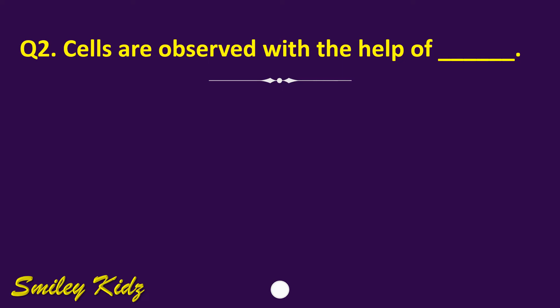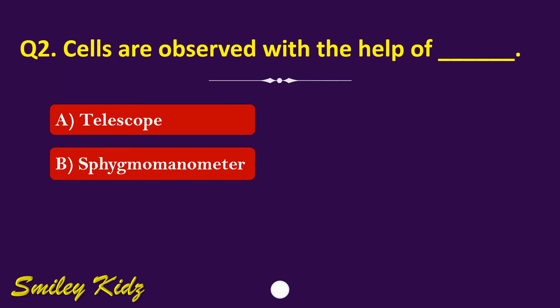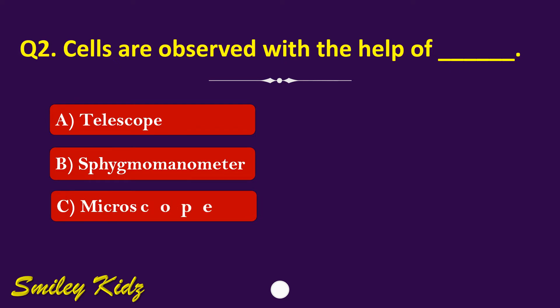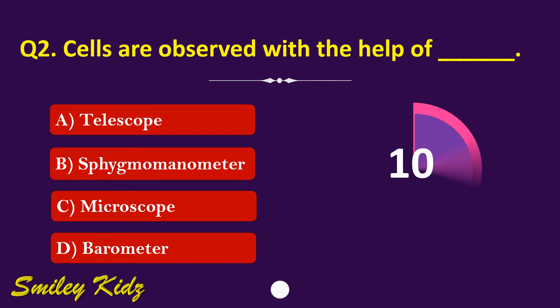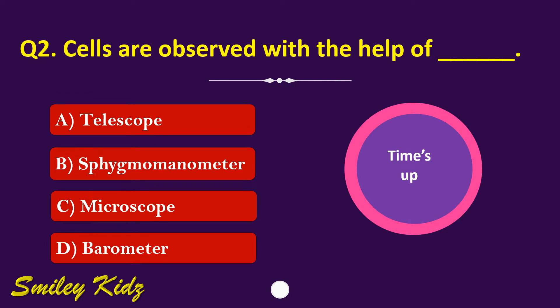Question number 2. Cells are observed with the help of dash. The options are: A. Telescope, B. Sphygmomanometer, C. Microscope, or D. Barometer. Your time starts now. Your time is up and the right answer is option C. Microscope. Cells are observed with the help of microscope.